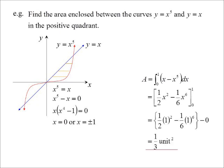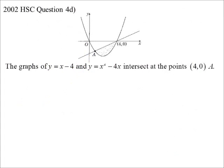An interesting thing about area between two curves: you don't have to worry about whether the region is above or below the axis, or if there's a bit of both — you simply subtract the top curve from the bottom. Now let's look at an HSC question: a parabola and a straight line, all below the x-axis. The graphs are given, and they intersect at the points (4, 0) and A.